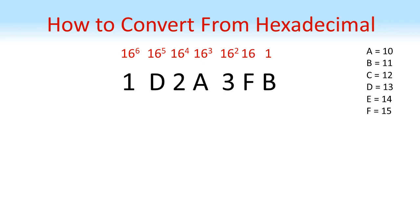Using this, starting from the left hand column we have 1 times 16 to the power of 6. We have d lots of 16 to the 5 but as we know d is equal to 13. We have 2 lots of 16 to the power of 4.